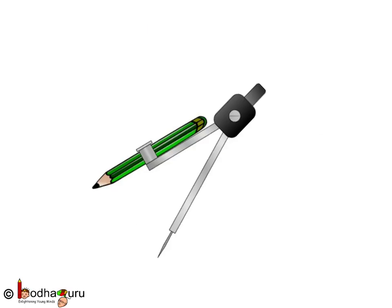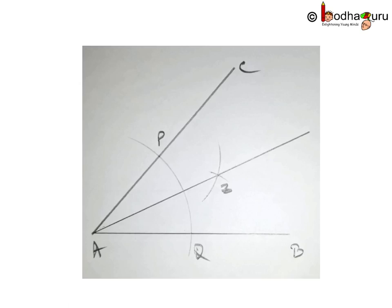Hello everyone. What else can be done using a compass? Well, we can divide any angle into two equal halves. That is, we can bisect the angle using a compass.